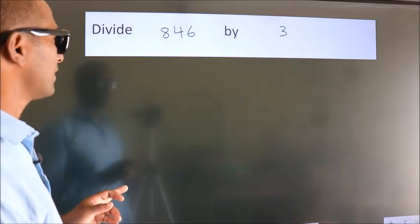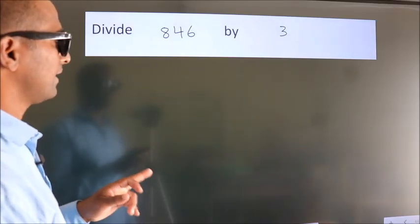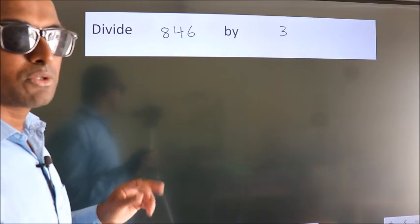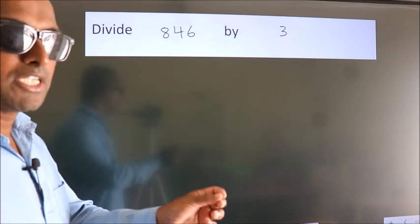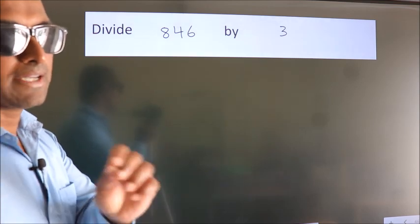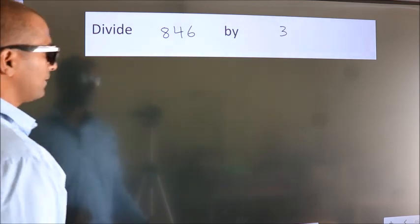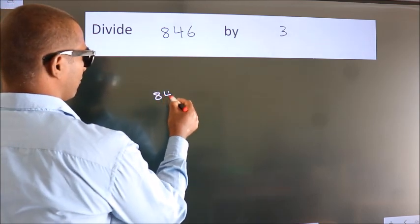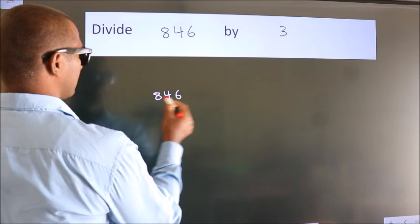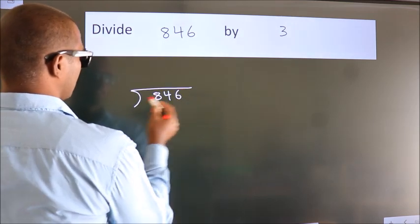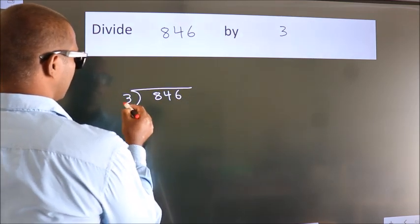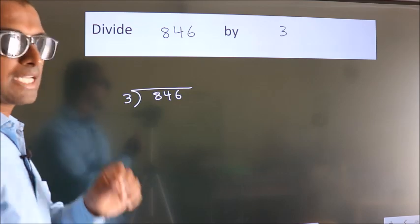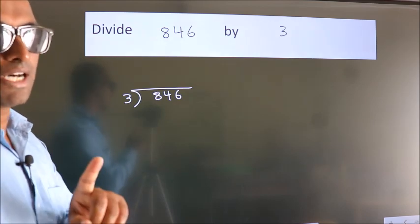Divide 846 by 3. To do this division, we should frame it in this way: 846 here, 3 here. This is your step 1.